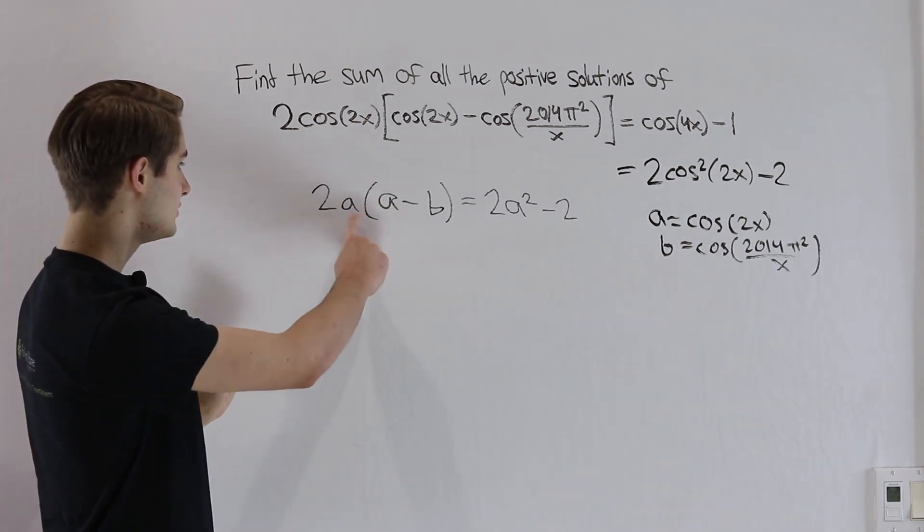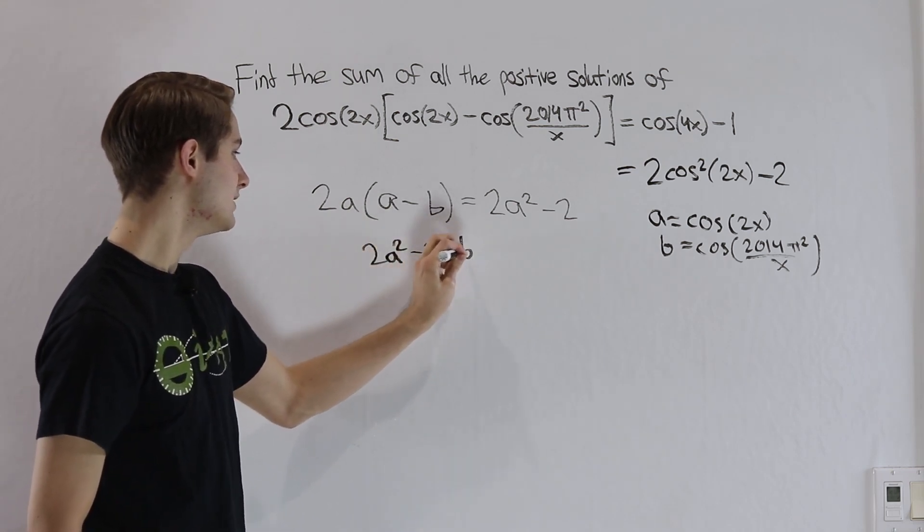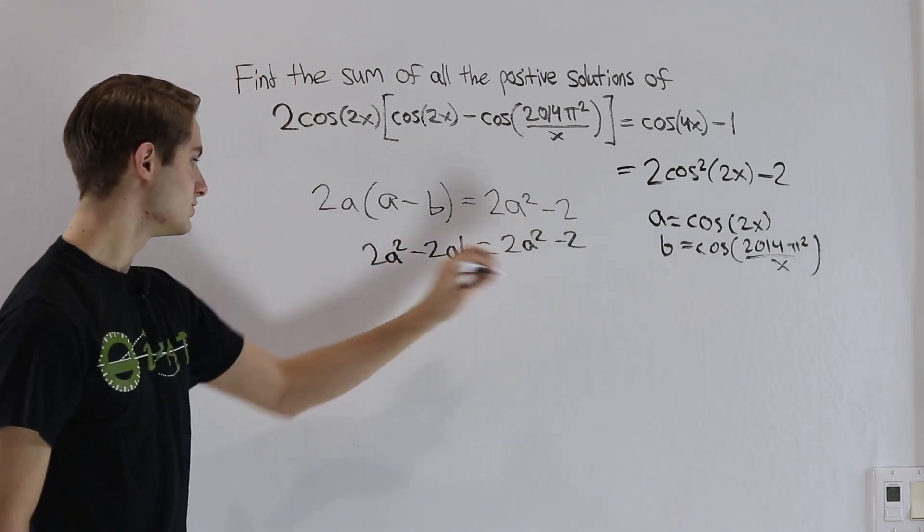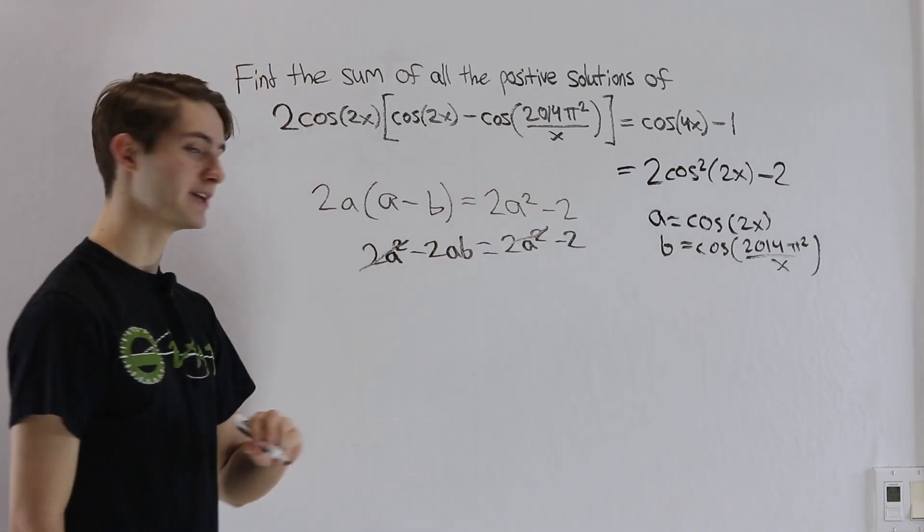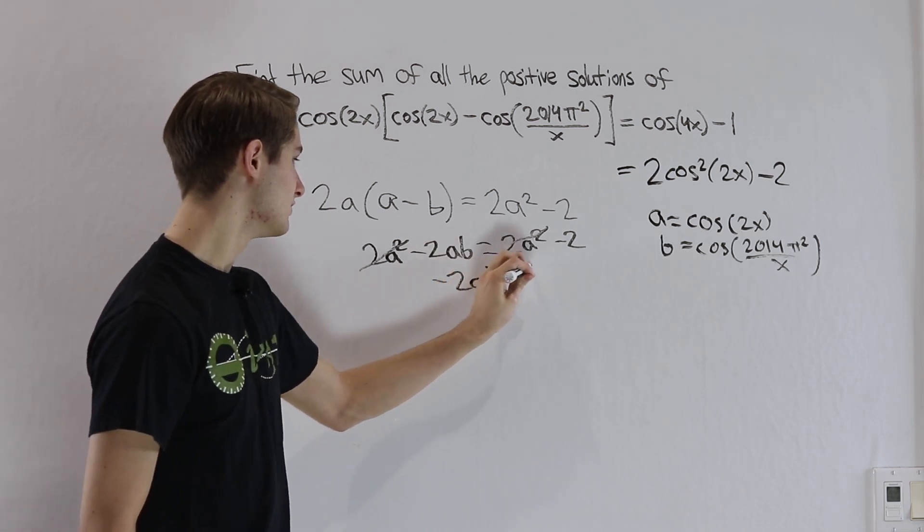If we expand this out, 2A times A is 2A squared, then minus 2AB, that's going to equal 2A squared minus 2. Notice we have a 2A squared on both sides that are going to cancel out. So we have negative 2AB equals negative 2.